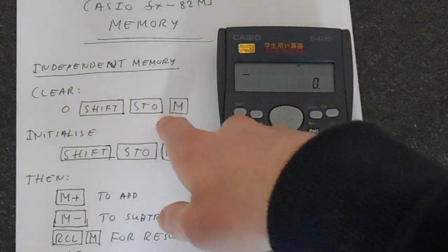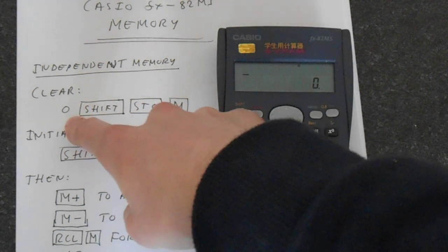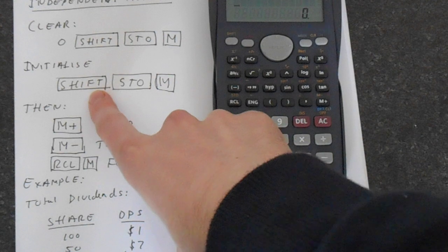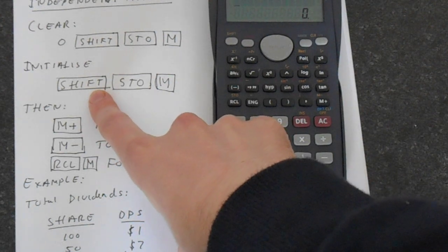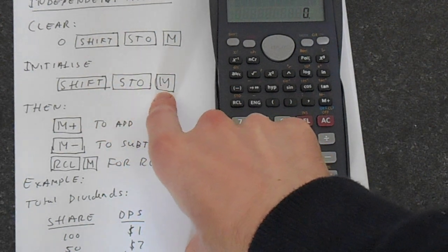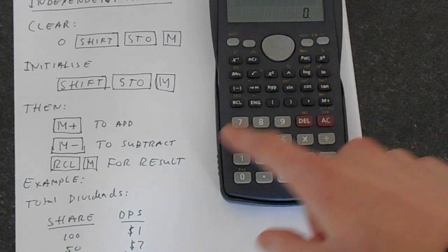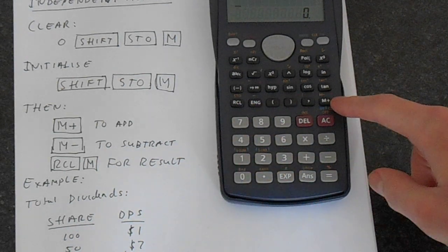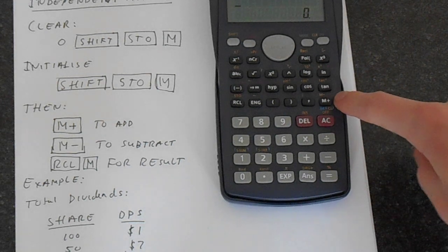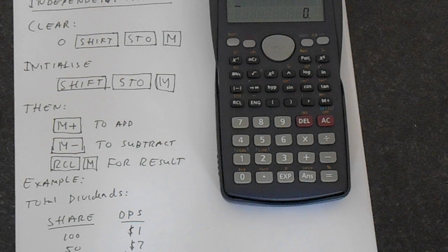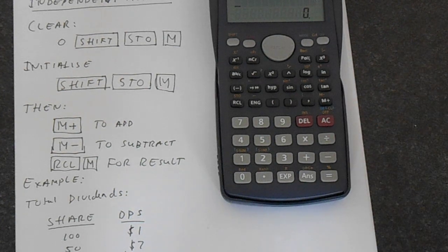You can clear the memory by just setting it equal to 0. To initialize the memory, so to put the first value in, you do Shift, STO, and then M. The M is located on the M plus button, but since you're using STO, you're actually accessing the red here. That's your variable M. It's much the same as assigning the variable before, because M is one of these red things.